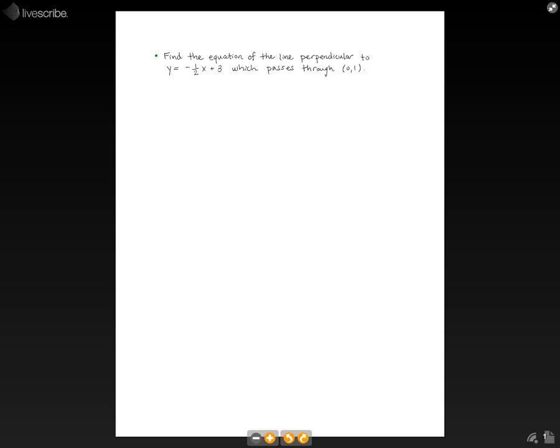Now, when two lines are perpendicular, we know that their slopes are negative reciprocals of one another.